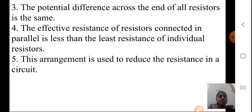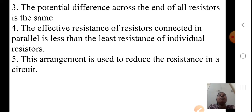Fourth: the effective resistance of resistors connected in parallel is less than the least resistance of the individual resistors — 1 upon Rp is less than the least individual value. Fifth: this arrangement is used to reduce the resistance in the circuit, meaning the flow of current is without hindrance. So, series is used to increase resistance, and parallel is used to reduce resistance in the circuit.